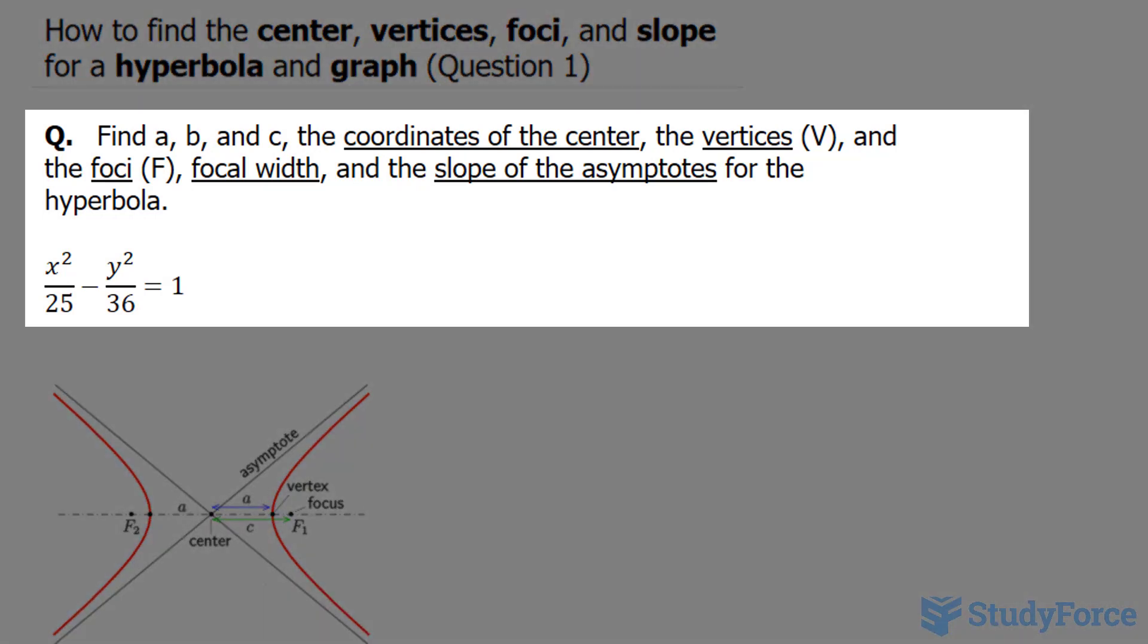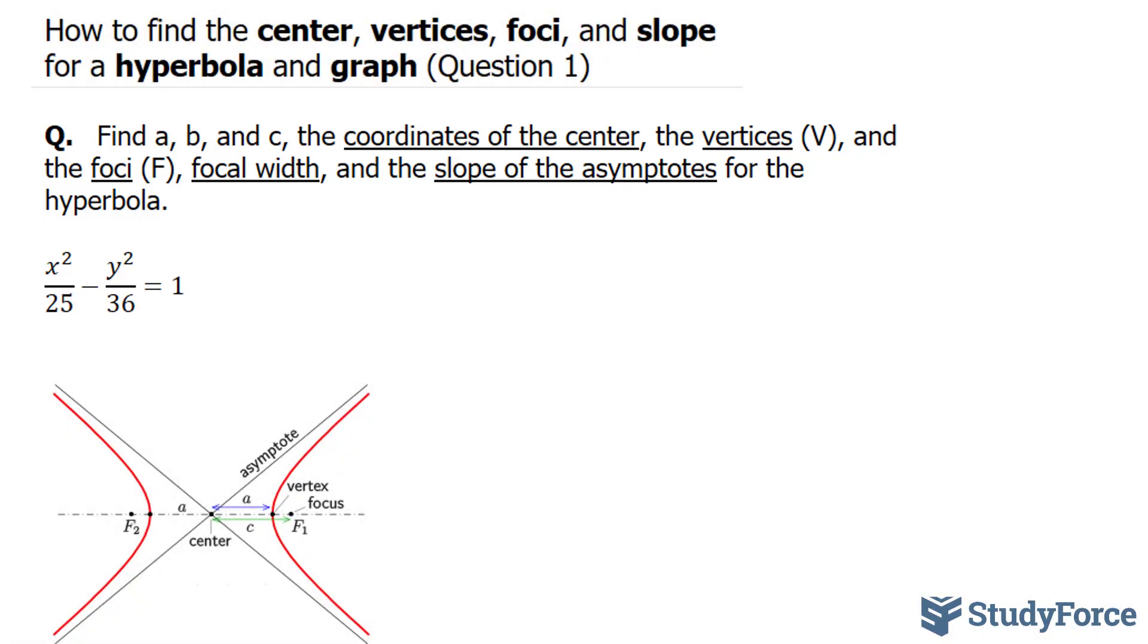The question reads, find a, b, and c, the coordinates of the center, the vertices v, and the foci f, focal width, and the slope of the asymptotes for the hyperbola represented by the equation x squared over 25 minus y squared over 36 is equal to 1.